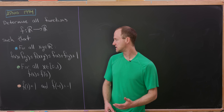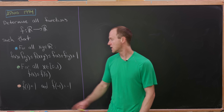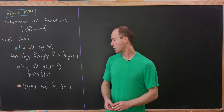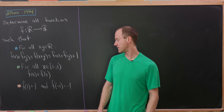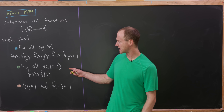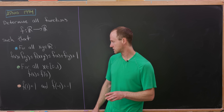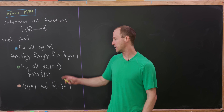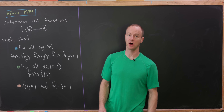Next, for all X on the half-open interval [0, 1), F(X) ≤ F(0). We also know two values: F(1) = 1 and F(-1) = -1. Let's look closely at this second condition and observe that perhaps we could extend it from an inequality to an equality to find the value of the function on this interval.